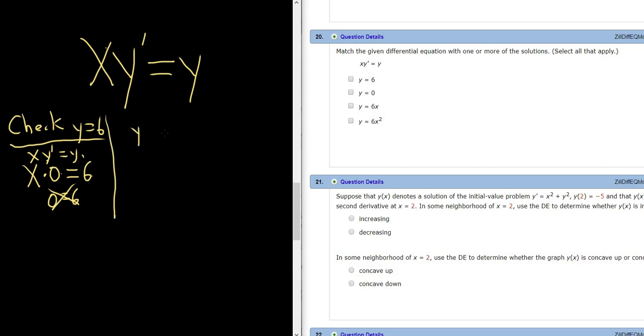Let's try y equals 0. I think this one will work. We get x times, well if y is equal to 0 then y prime is also 0, and that should be equal to y which is 0. So 0 equals 0. Yes. Success. So y equals 0 is one of the answers.